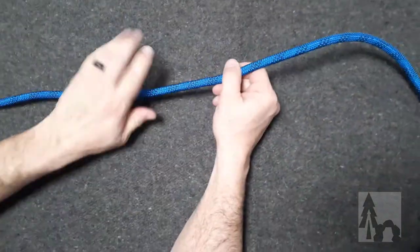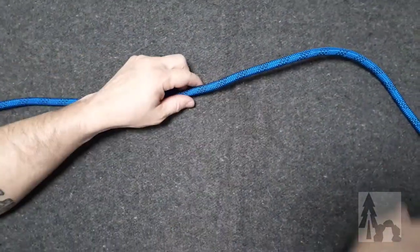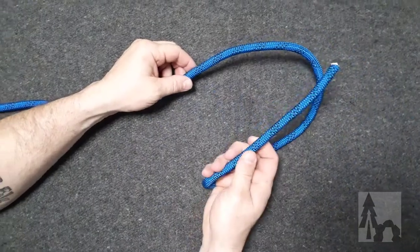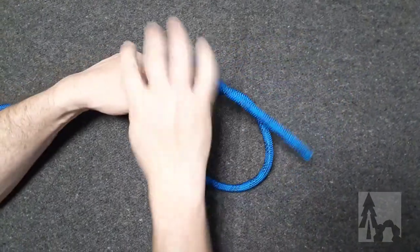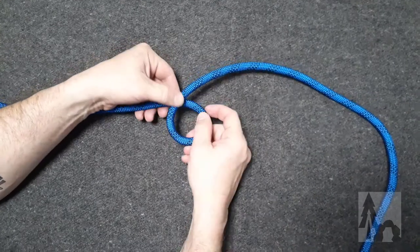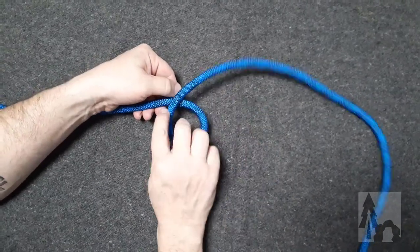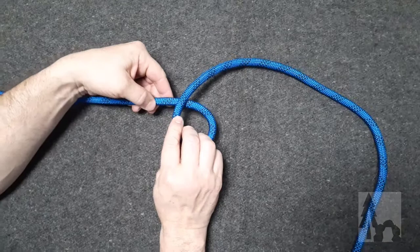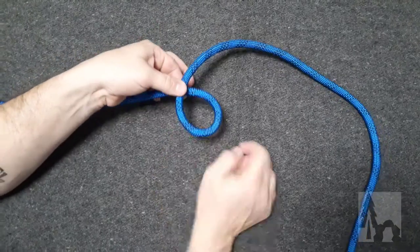For the video purposes, our standing end is coming from my left and my working end is over here on my right. First thing I'm going to do is make an overhand loop. It's an overhand loop because my working end is crossing over the standing end on top. And then I'm going to hold at the crossing.